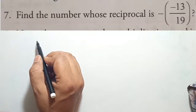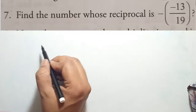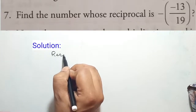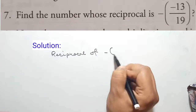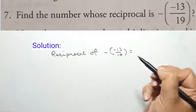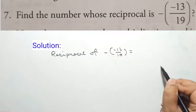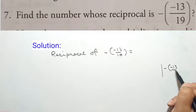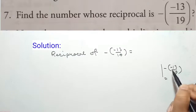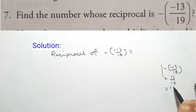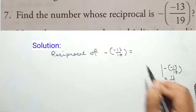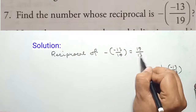Question 7: Find a number whose reciprocal is minus bracket minus 13 by 9. First, solve minus minus 13 by 19 — minus minus becomes plus, so we get 13 by 19. Writing the reciprocal of 13 by 19 gives us 19 by 13. So the answer is 19 by 13.